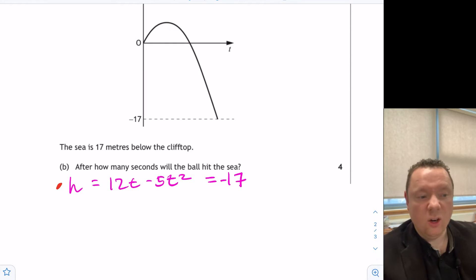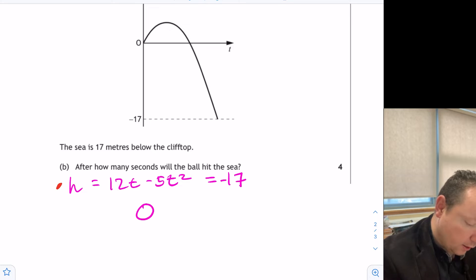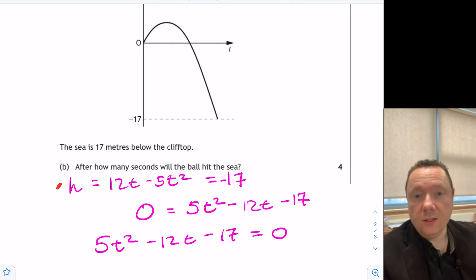Part two then says once we've got our equation, we just need to solve that equation in a normal way. So this is a quadratic. If I move everything to the right-hand side, I'll get zero on this side. I'll get 5t² - 12t - 17, or in the more familiar way, 5t² - 12t - 17 = 0. So that's a quadratic that we can now solve.